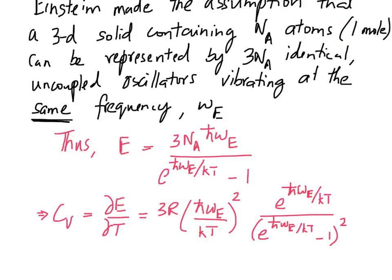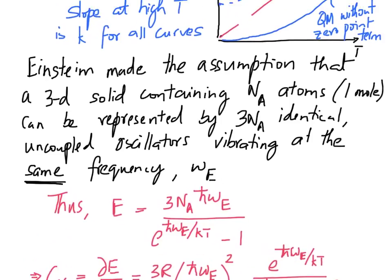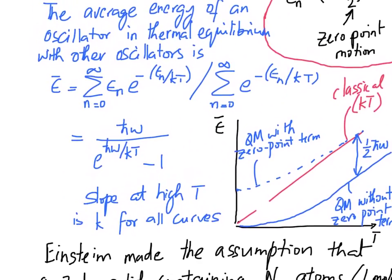With those assumptions, we can write down the total energy of this system composed of N_A atoms. This is nothing but 3 N_A times the average energy of the oscillator that we discussed earlier, where omega of course is replaced by omega e, the Einstein frequency, the characteristic frequency of oscillation of all the springs within our solid.